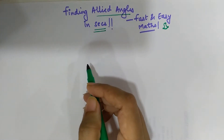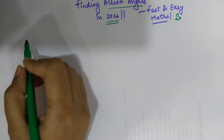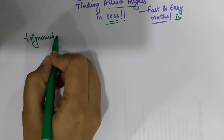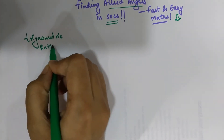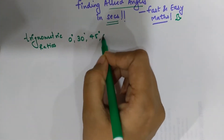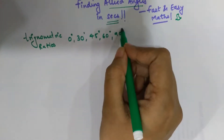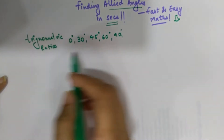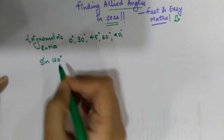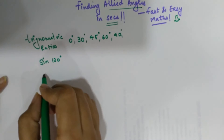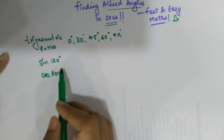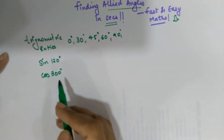So what are allied angles? We already know the values of all the trigonometric ratios for angles 0°, 30°, 45°, 60°, and 90°. But what happens when someone asks you to find sine of 120° or cos of 300°? Finding these values becomes a bit tricky.